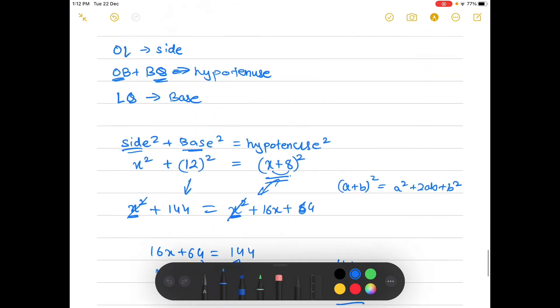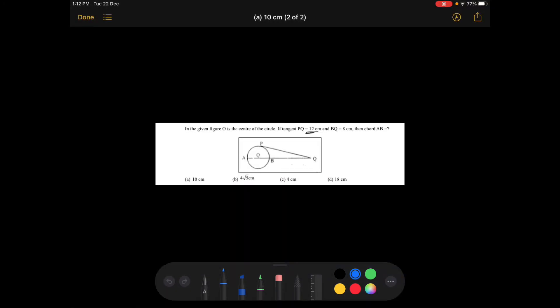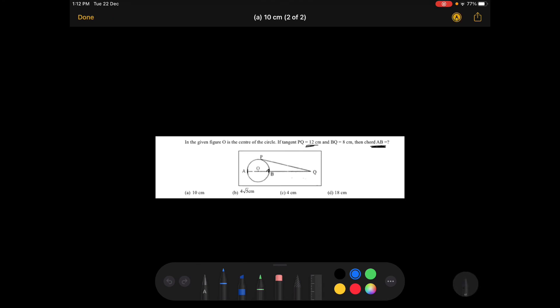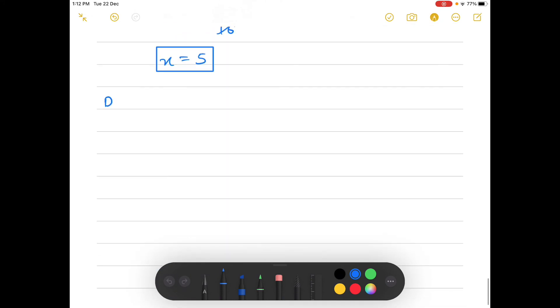Now that we have found out the radius of the circle, we need to tell the value of AB which is the diameter. We know that diameter is equal to 2 times the radius.